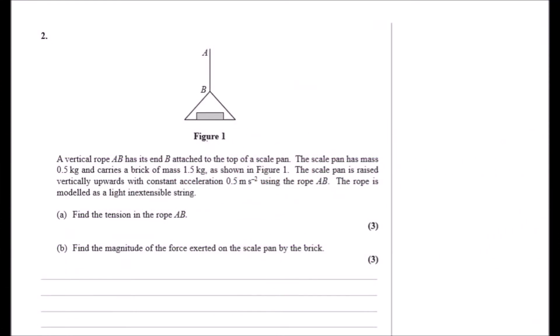Okay guys, here we go, number two. We've got a vertical rope AB with its end B attached to the top of a scale pan. The scale pan has mass 0.5 kg and carries a brick of mass 1.5 kg, so effectively the total weight so far as we know is 2 kg, 2 times g. Now the scale pan is raised vertically upwards with constant acceleration 0.5.